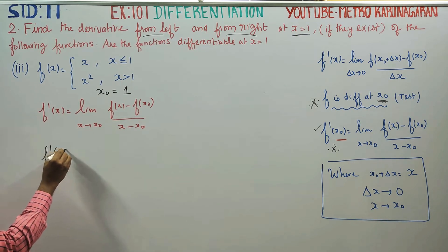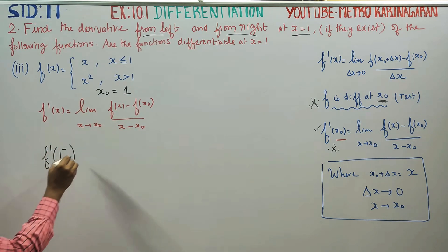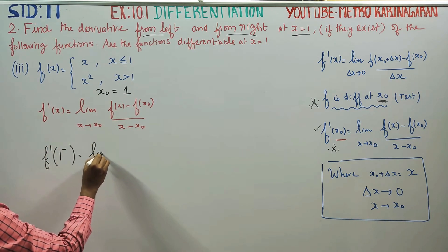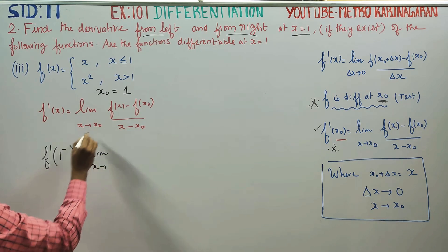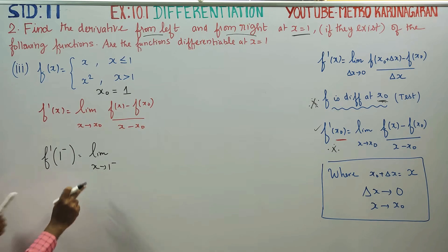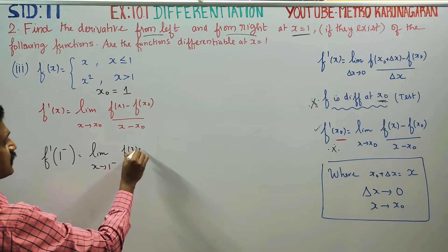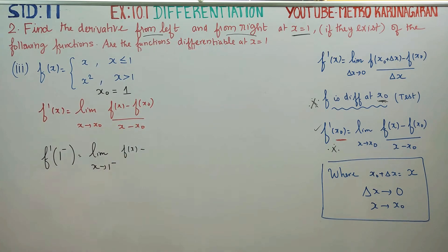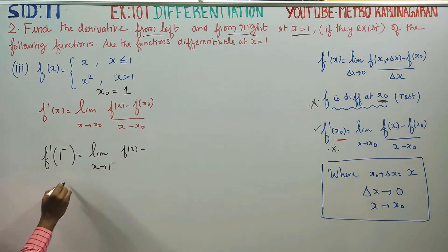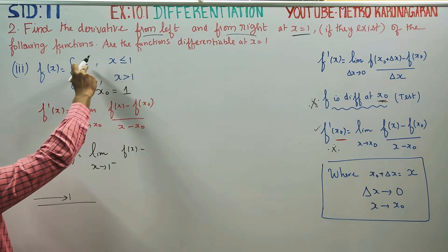For the left hand side derivative, that is the direction to the left of 1, we approach from 1 minus. So x₀ is equal to 1, and f(x) is taken from the left-hand side where x is less than or equal to 1.